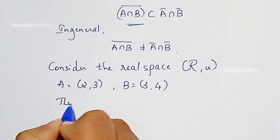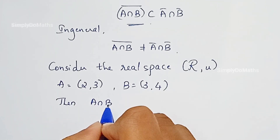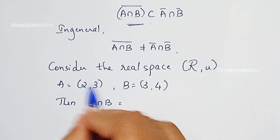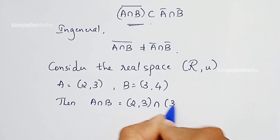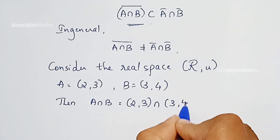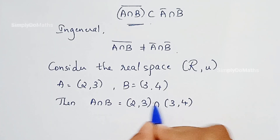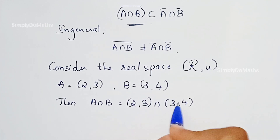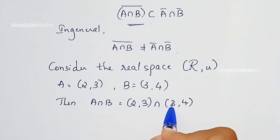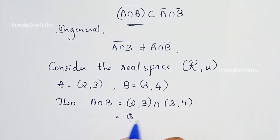Let us find the value of A intersection B. A intersection B is the open interval (2, 3) intersection the open interval (3, 4). Since it is an open interval, 3 is excluded from this interval and 3 is excluded from this interval. So no element is common.